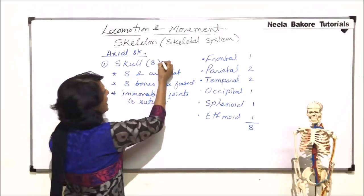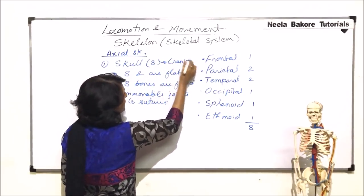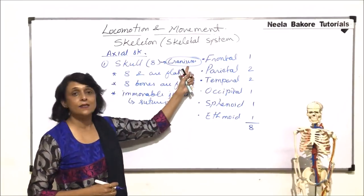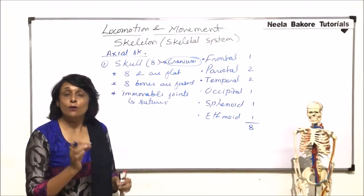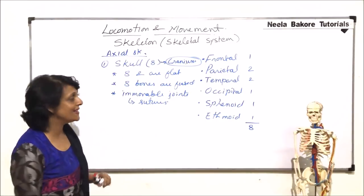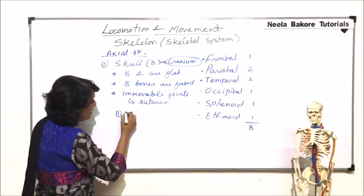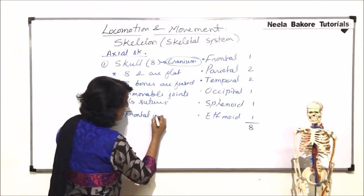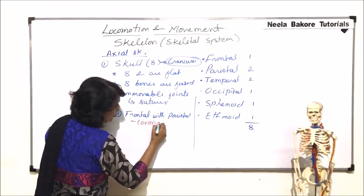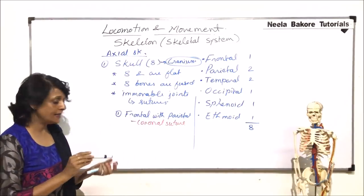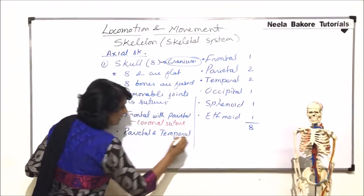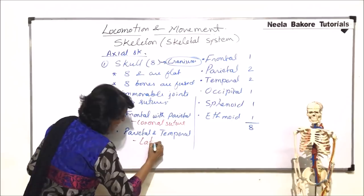When we talk of the skull, we are actually talking of the cranium part. The cranium has all these eight bones. As we said, they are joined by immovable joints called sutures, which have also been given names. The first suture is between the frontal and parietal bones — this is known as the coronal suture. The second suture is between the parietal and temporal bones — this suture on the side is known as the lateral suture.